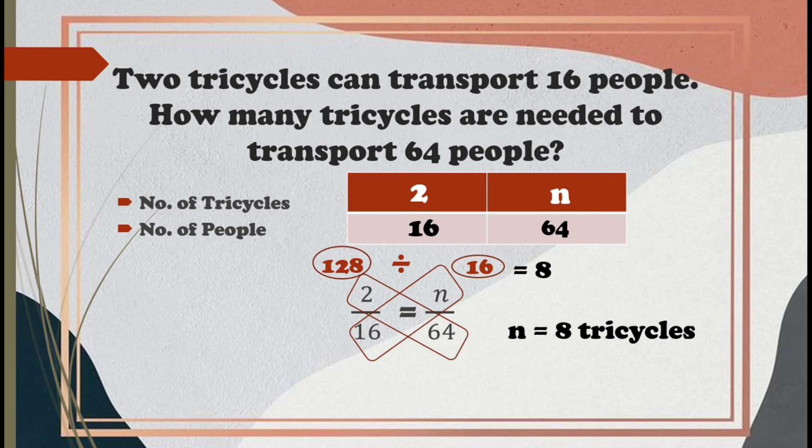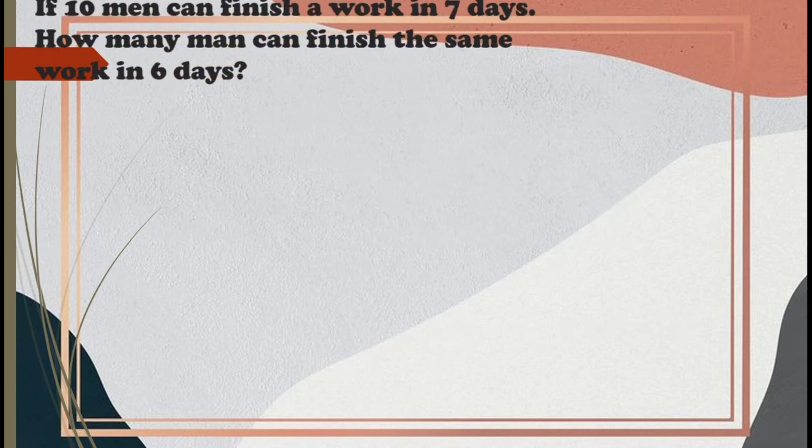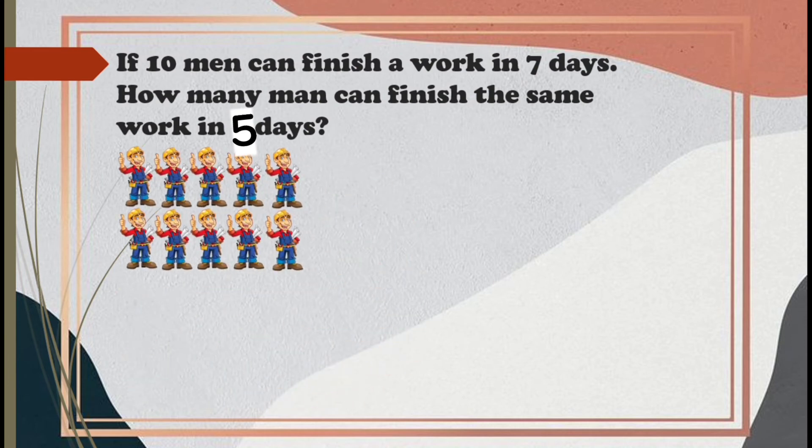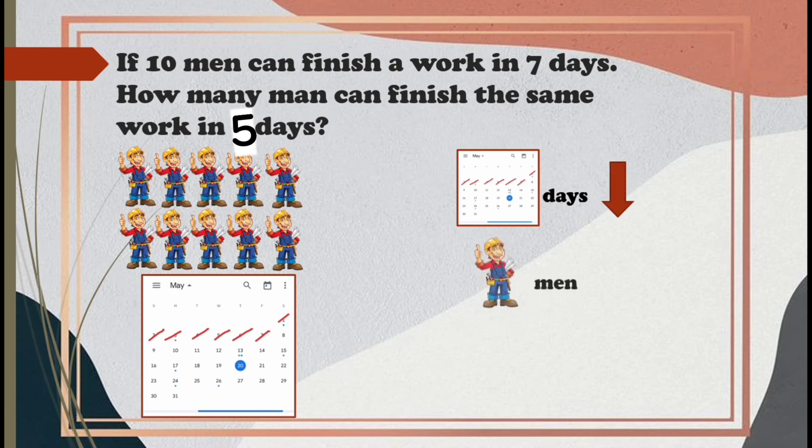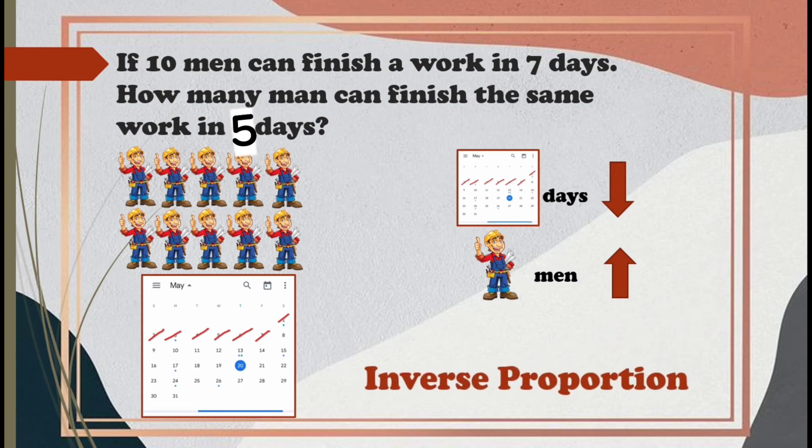It means there are 8 tricycles we need for 64 people. Good job! Now, let's have our next problem. If 10 men can finish a work in 7 days, how many men can finish the same work in 5 days? Here, in the given situation, when the number of days decreases, the number of men should increase. This is an example of inverse proportion.